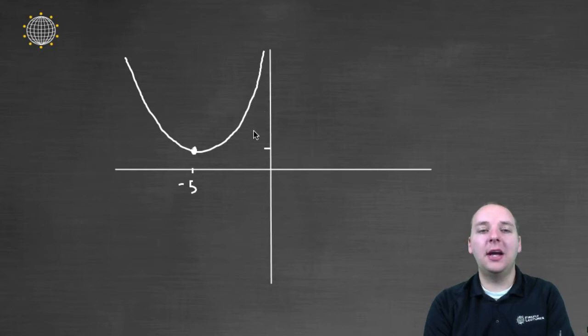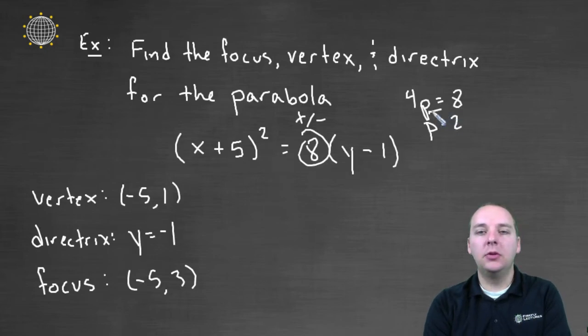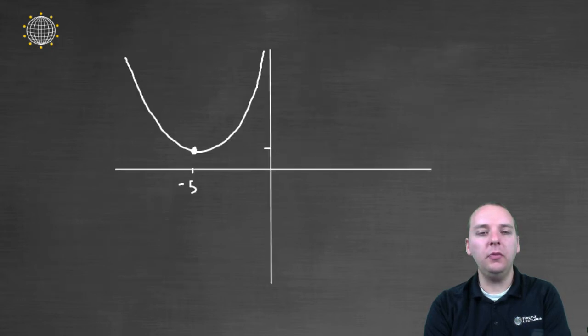Which means the directrix must be below the vertex, so it must be down here. But down below the vertex by how much? 2 units, right, 2 units, because that was our p-value. Okay, so we'll go down 2 units from 1.